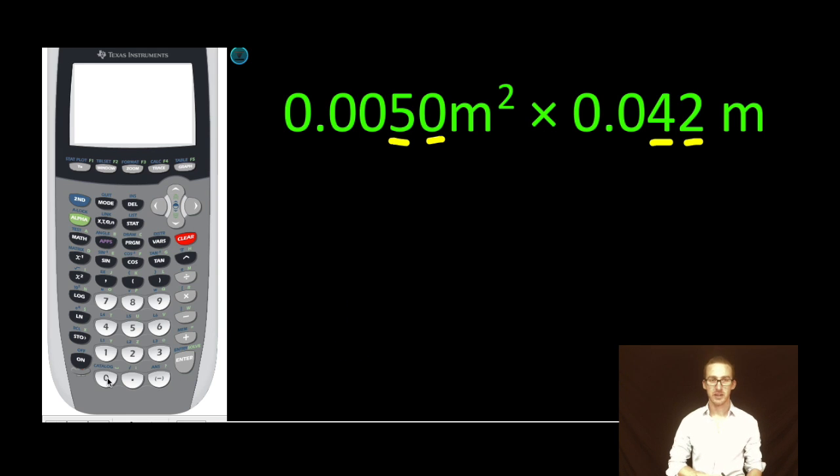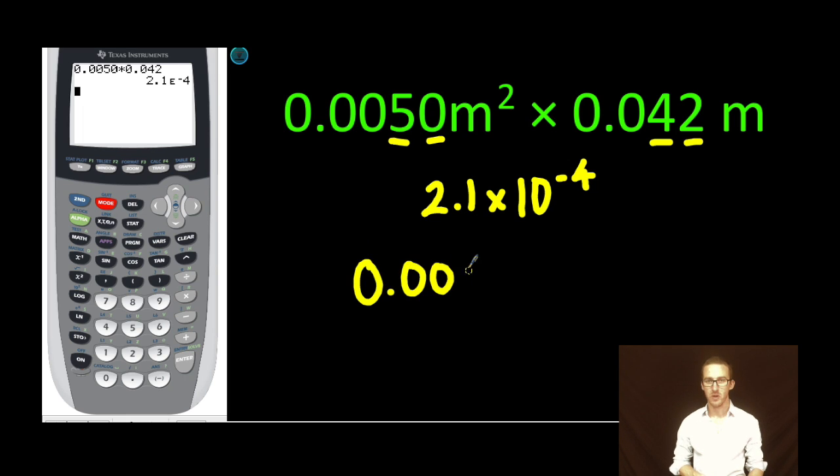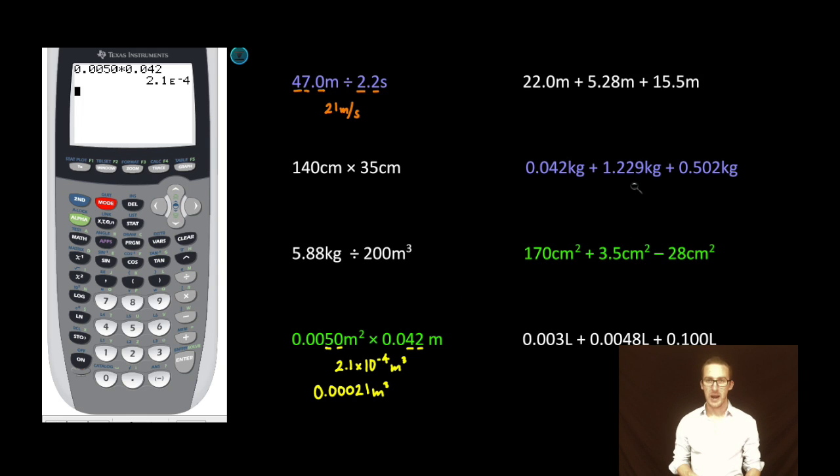I jump over to my calculator. Now as you'll notice my calculator gives me the answer in scientific notation 2.1 times 10 to the negative 4 but recognize this is two significant digits. If I were to write this number in standard notation 0.00021 meters cubed, notice that I have just two significant digits. Alright next problem.